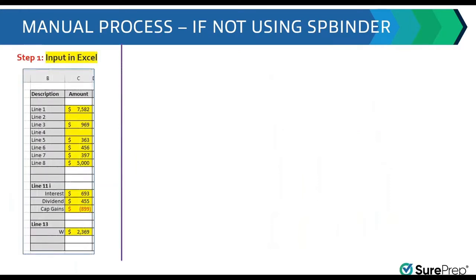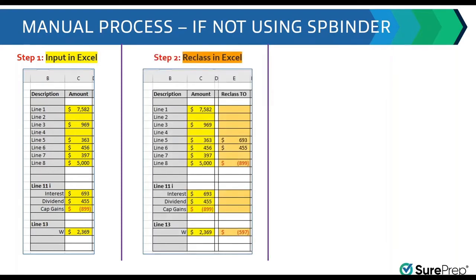The manual process may look like something in these steps. Step 1: the preparer would input the supplemental page amounts in Excel. We have seen most firms use Excel. This Excel may not be a standard Excel used in the same office — it could differ between different partners, or it may be different across different offices of the same firm. In step 2, you reclass the numbers in the same Excel, which has complex formulas built in. You pick up the numbers from the source and reclass them into the second column. This calculates the final amounts that should then go into the final tax return.